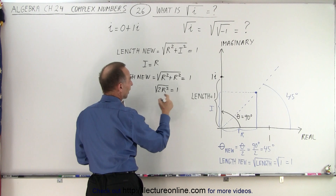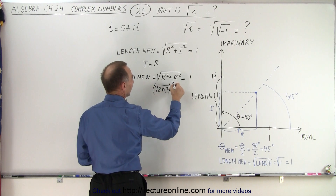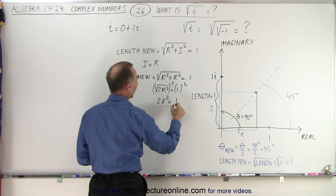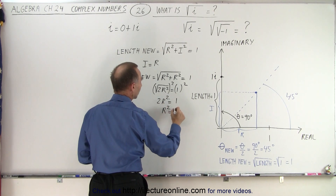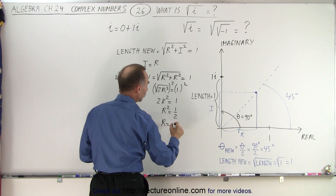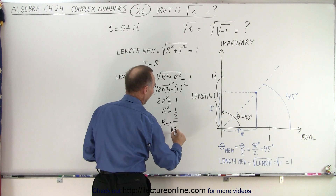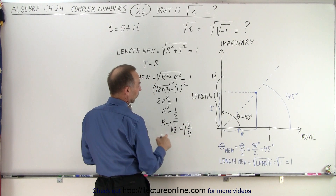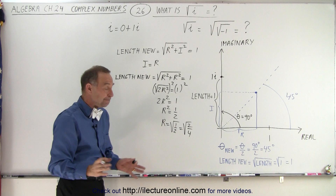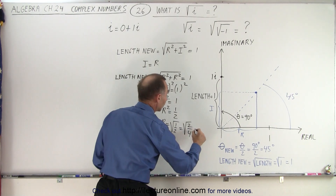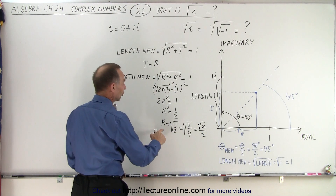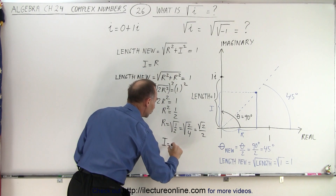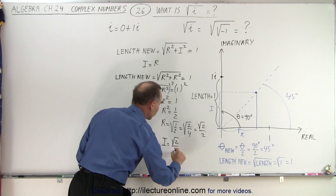If we now square both sides, that means that 2r squared must equal 1, or r squared must equal 1/2, or r must equal the square root of 1/2, which is equal to the square root of 2 over 4, because 1/2 and 2/4 are the same, which means that this is equal to the square root of 2 over 2. And of course if r is equal to that and r is equal to i, that means that i must equal the square root of 2 over 2 as well.